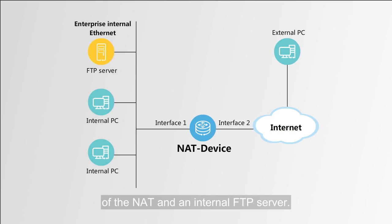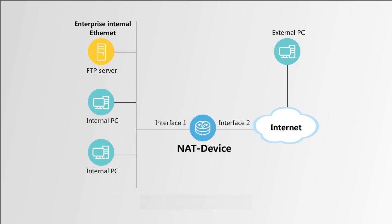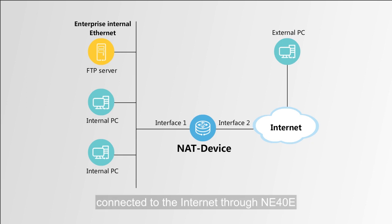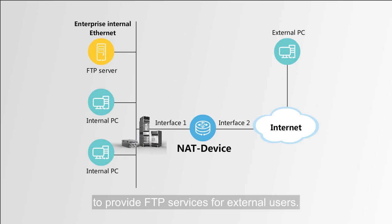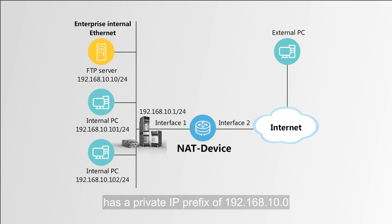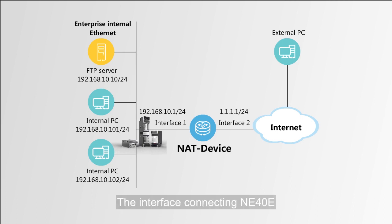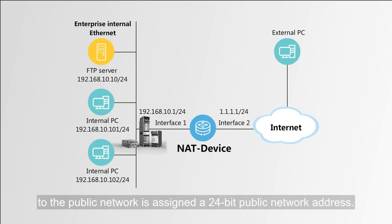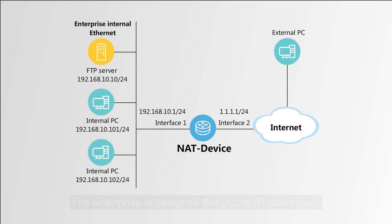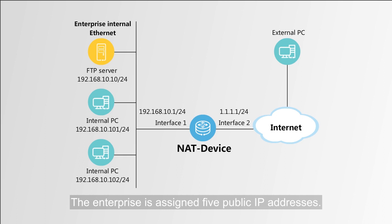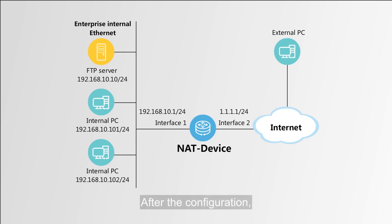Next, let's look at the networking requirements of NAT and an internal FTP server. As shown in the figure, the internal FTP server of the enterprise is connected to the internet through NE40E to provide FTP services for external users. The IP address of the internal FTP server has a private IP prefix of 192.168.10.0 with a mask length of 24. The interface connecting NE40E to the public network is assigned a 24-bit public network address.